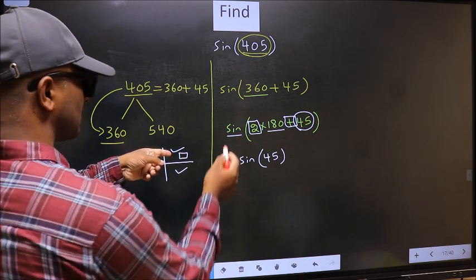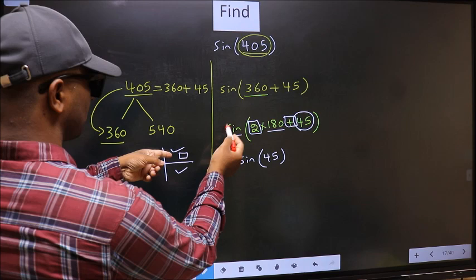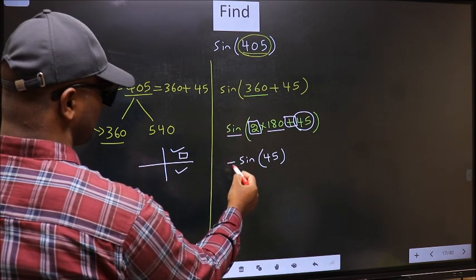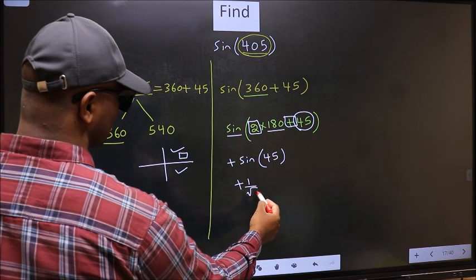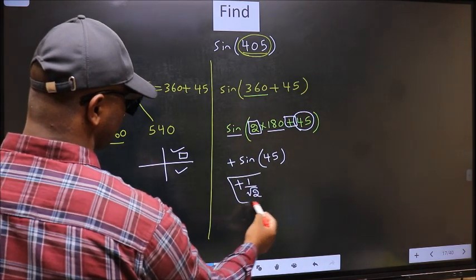And in the first quadrant, sin is positive. So we should put plus. So plus sin 45 is 1 by root 2. This is our answer.